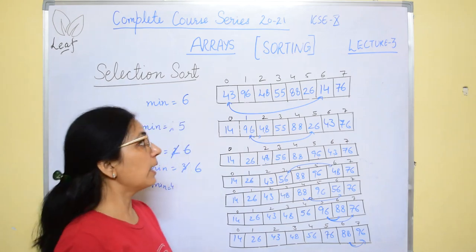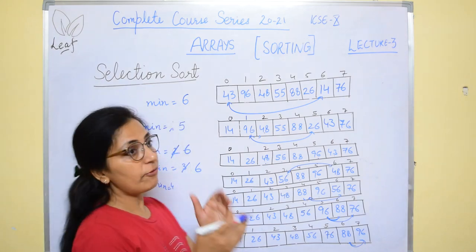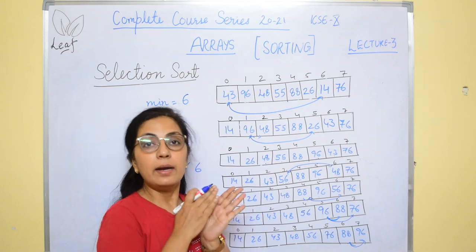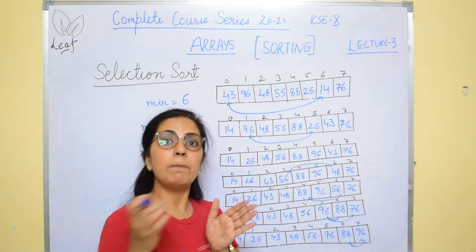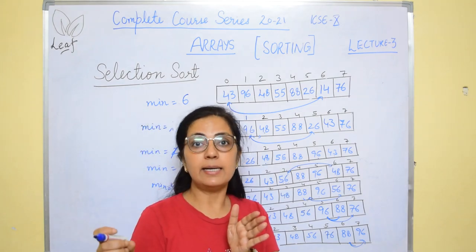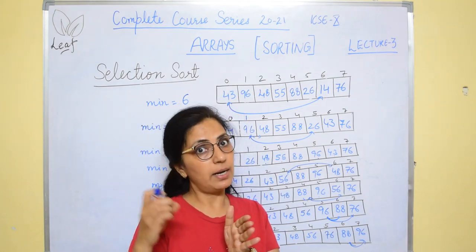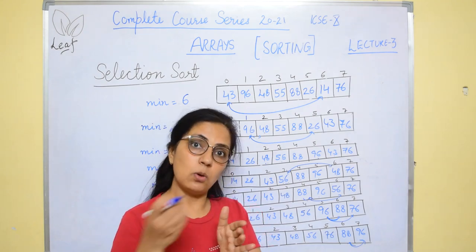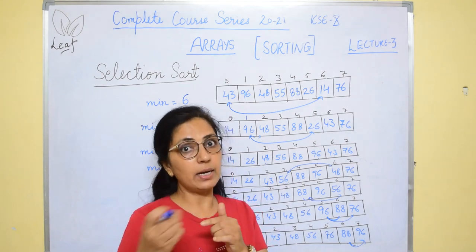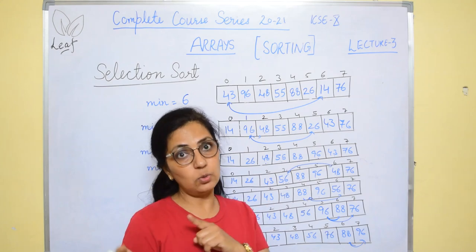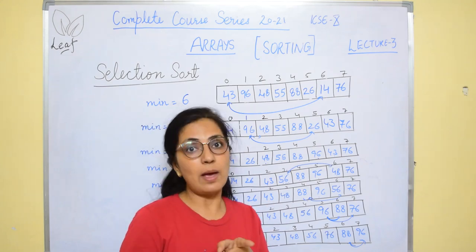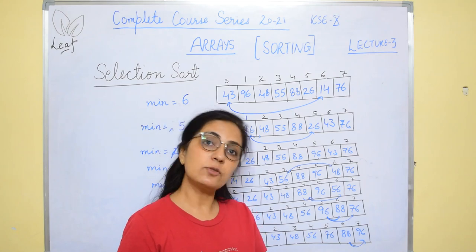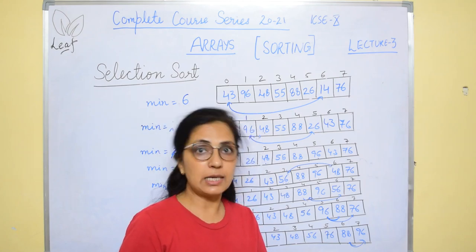So this is the final result. If you see, the array elements are stored in ascending order now: 14, 26, 43, 48, 56, 76, 88, and 96. So in selection sorting, what happens: first store the index number of the first element, find the minimum among the remaining elements for ascending order, compare it, and then do the swapping. Now let's see the programming statements for selection sorting.